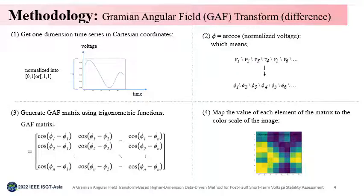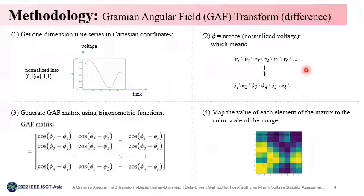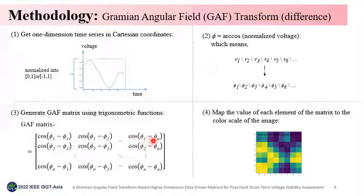Before discussing the proposed method, the Gramian Angular Field GAF transform needs to be mentioned, which transforms the original voltage time series into 2D matrices. Specifically, the voltage samples are normalized first. Then, the arc cosine function is performed to obtain angle values. In the proposed method, one of the transform options, GADF based on difference value, is adopted to better capture the voltage change, as step 3 shows. Every two angles generate a difference value with a cosine function. Finally, after a color-scale mapping, the GAF matrix can be represented in the form of a 2D image.